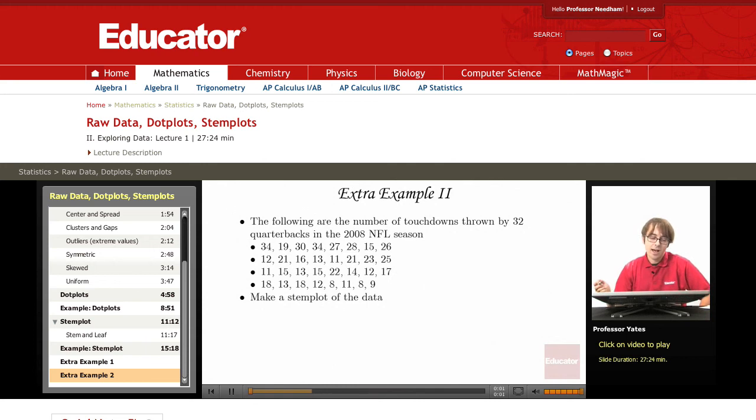The second example we're going to look at is the number of touchdowns thrown by 32 quarterbacks during the 2008 NFL season. This is actual data that you can find online.